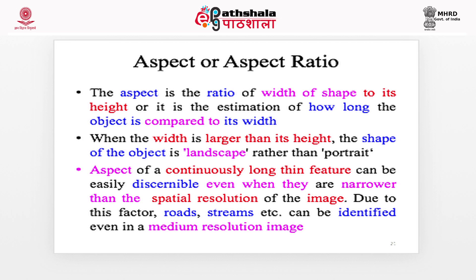Aspect, or aspect ratio, is the last visual image interpretation element. It is the ratio of the width of a shape to its height, or the estimation of how long an object is compared to its width. When the width is larger than the height, the shape of the object appears in landscape form. The aspect of a continuously long, thin feature can be easily discriminated even when it is narrower than the spatial resolution of the image. Due to this factor, roads, streams, and other linear features can be identified even in a medium-resolution image having 30, 40, or 50 meter resolution.